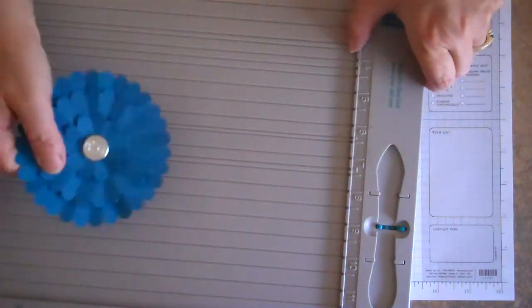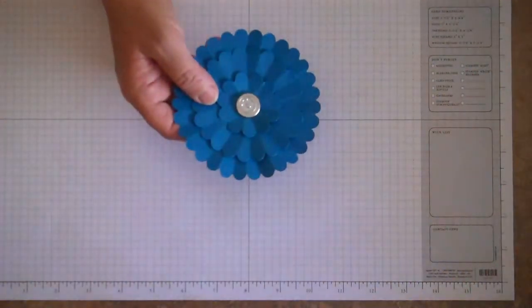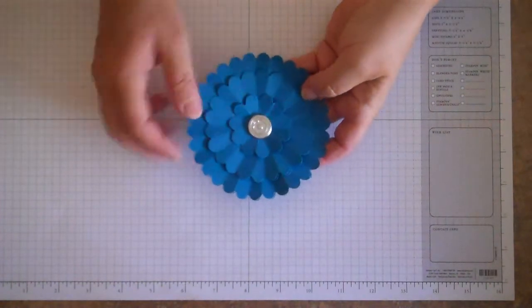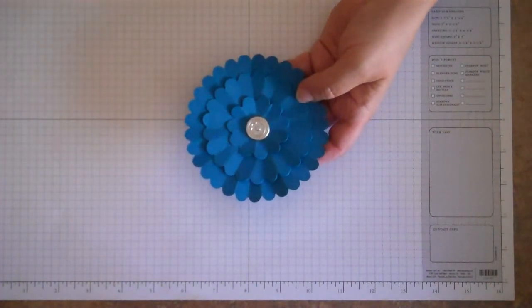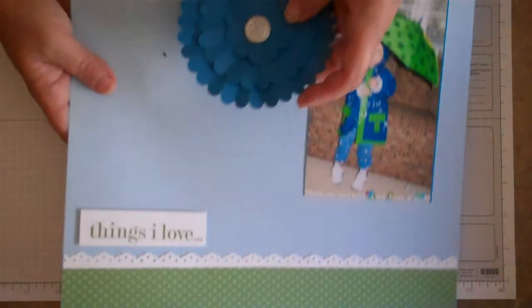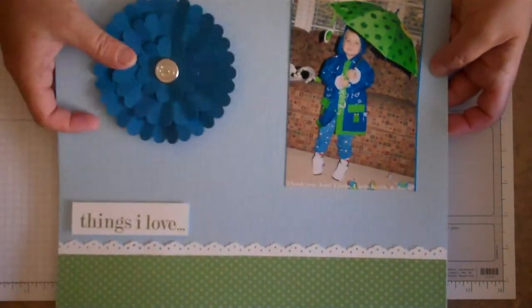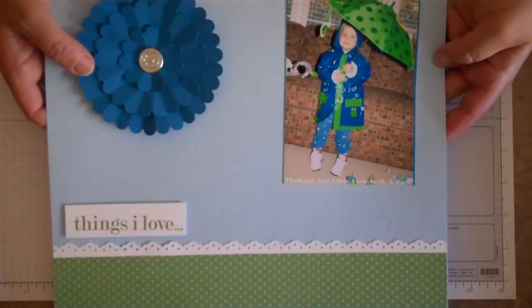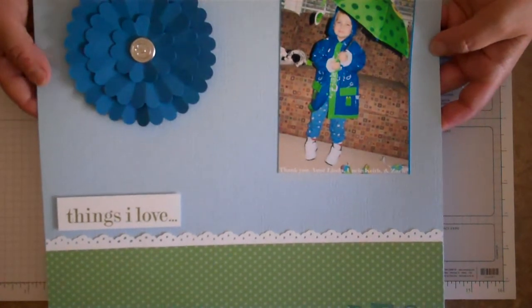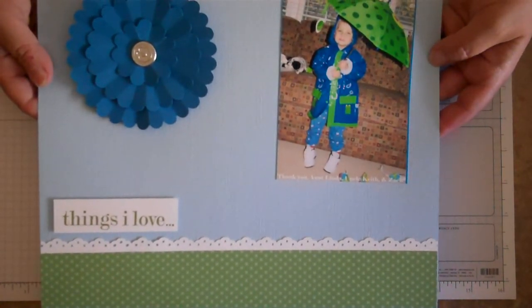And then all I've done on this is I've just added a flower brad in the center, which just adds so much to this whole thing. And then I'll show you how I use it on a scrapbook page. This is my great nephew, Ben. And all the colors just happen to fall together with this. So I wanted to show you this real quick. But look at how beautiful that changes that scrapbook page.